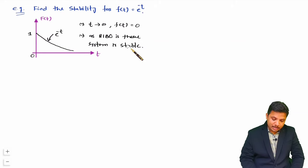Let me give you one more problem. Here f(t) = e^t. Plotting in the time domain: at t = 0, f(0) = 1, and as time increases, the function increases exponentially. As t approaches infinity, f(t) goes towards infinity. This does not give bounded input, bounded output because the output goes towards infinity. Therefore, the system is unstable.